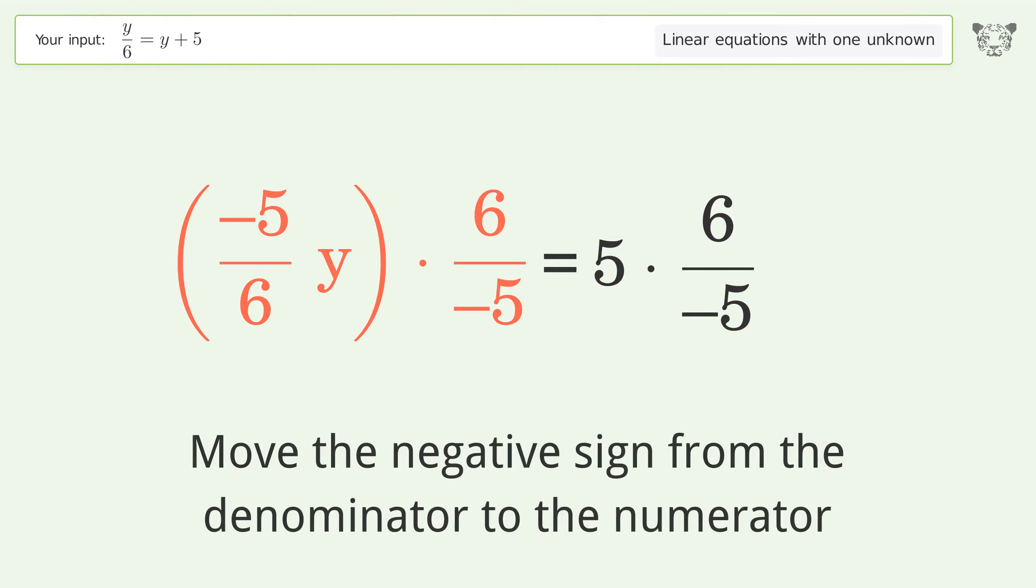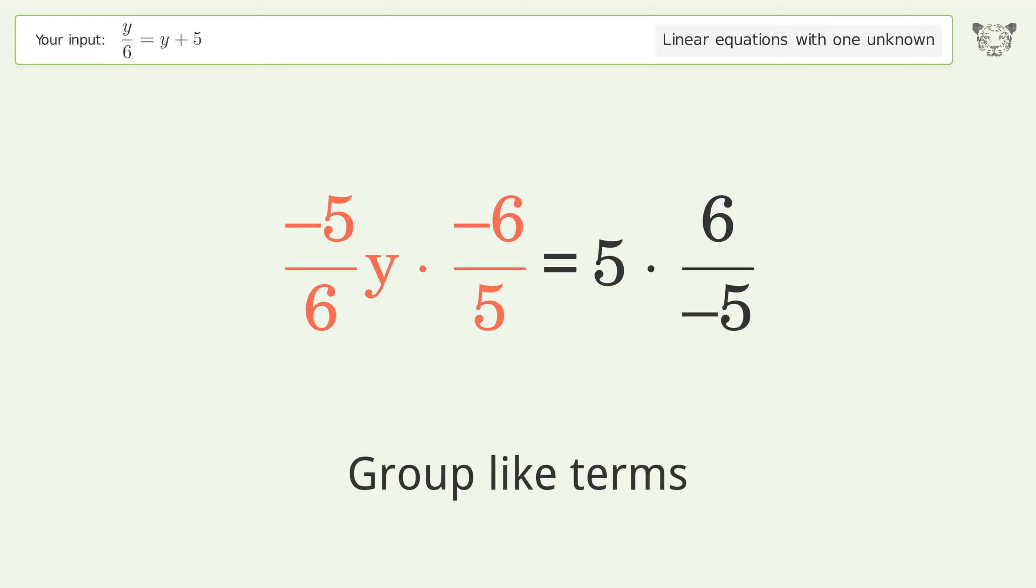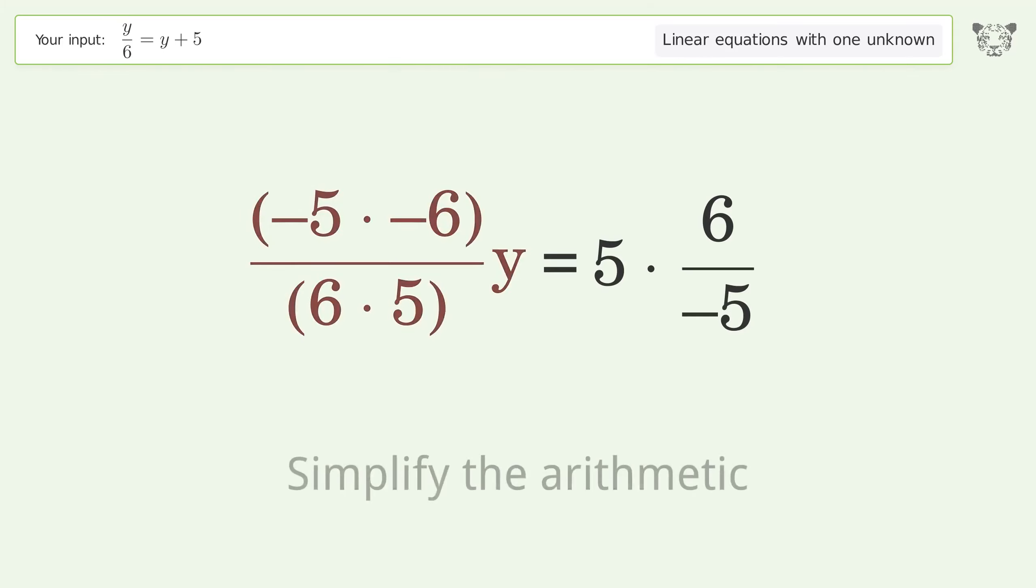Move the negative sign from the denominator to the numerator. Group like terms. Multiply the coefficients. Simplify the arithmetic.